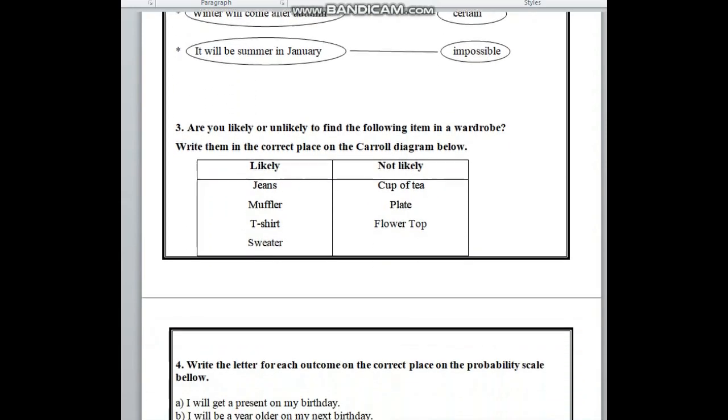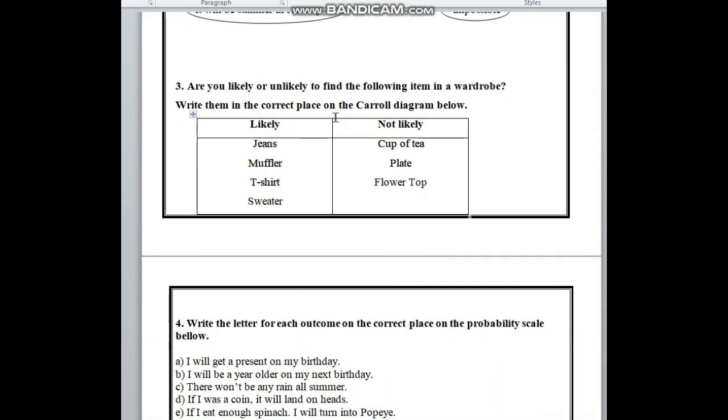In number 3, here is are you likely or unlikely to find the following item in a wardrobe? Write them in the correct place on the Carroll diagram below. In your book, you can see in the left side, there are pictures and in this picture, there are jeans, muffler, t-shirt, cup of tea, plate, flower top, sweater.